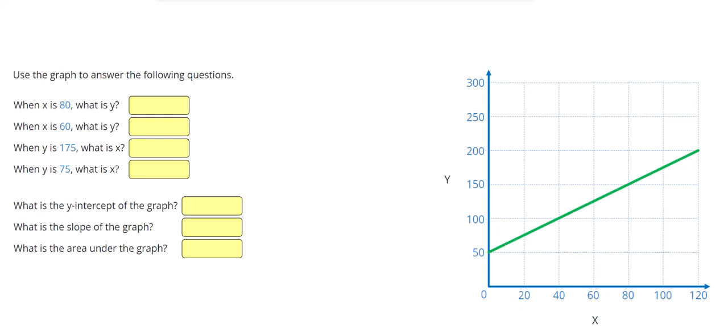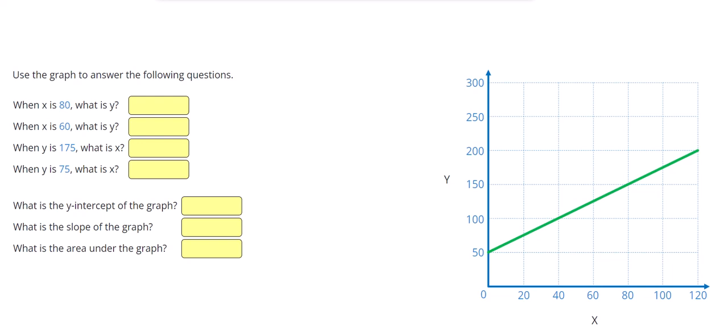All right, in this video, we're going to work on graph interpretation. Our first question says, when x is 80, what is y? So let's go over, we find the x-axis, and when x is 80, this corresponds to a y value of 150.